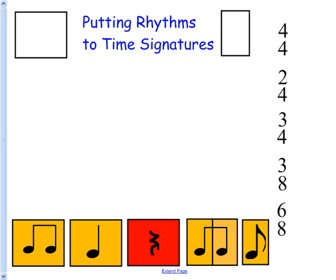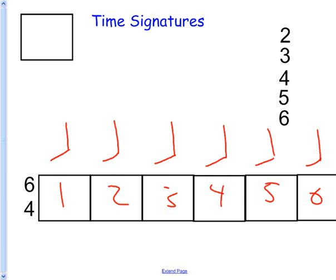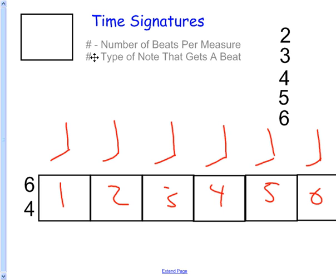So that is an introduction to time signatures. Just remember the two key things: the number of beats per measure and what type of note gets a beat. Then just build them accordingly. Thank you very much.